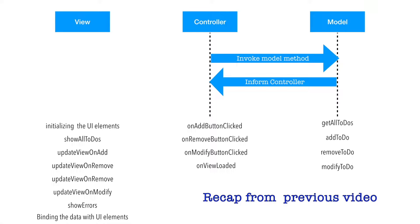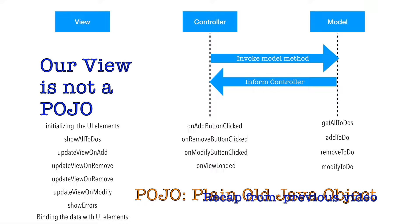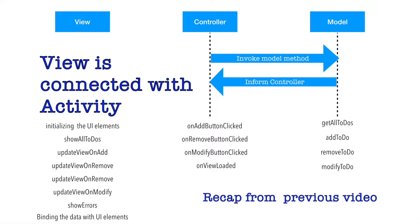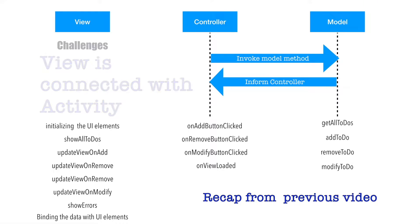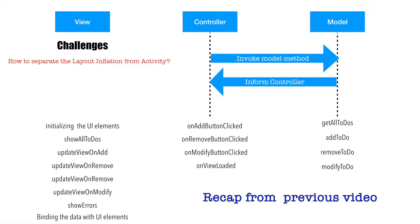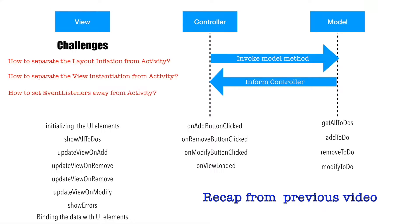It's very easy to say that these are the View's responsibilities, but our View is not a normal View. At the end of the day, our View is getting rendered in an activity. The main challenges are: how to separate the layout inflation from the activity, how to separate the View instantiation from the activity, how to set the event listeners away from the activity, and last but not least, how the lifecycle of the activity plays into all of this.